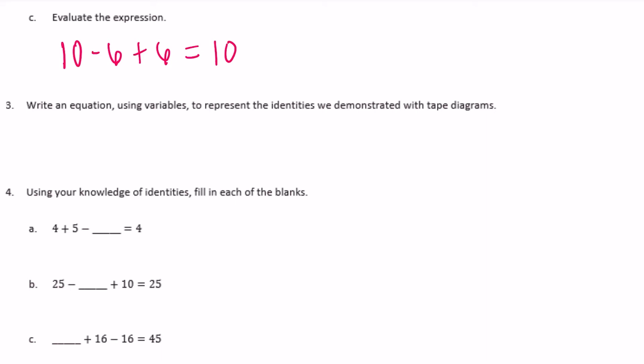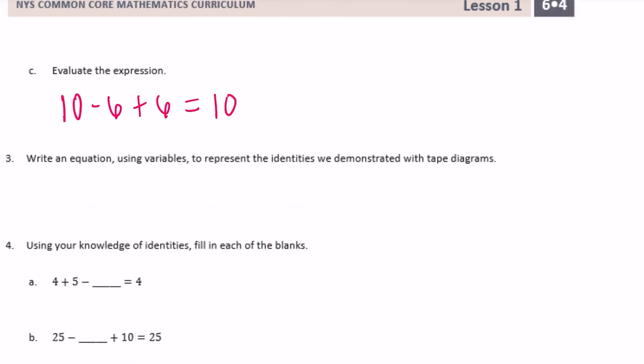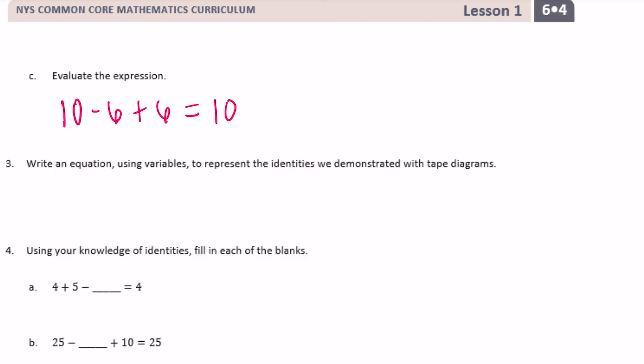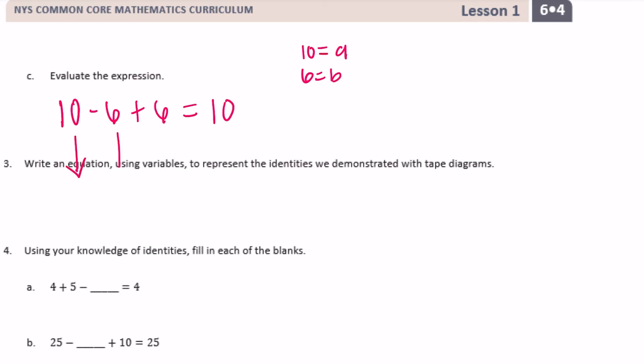Number 3. Write an equation using variables to represent the identities we demonstrated with tape diagrams. So I'm just going to take the last expression that we did and replace everything with a different variable. So for example, I'm going to make 10 equal to a and 6 equal to b. And those are the only two numbers we have.